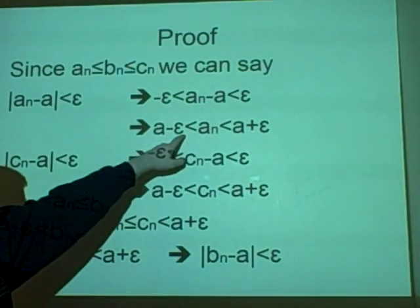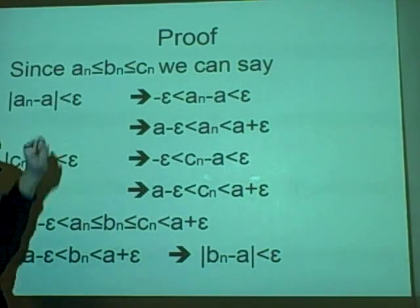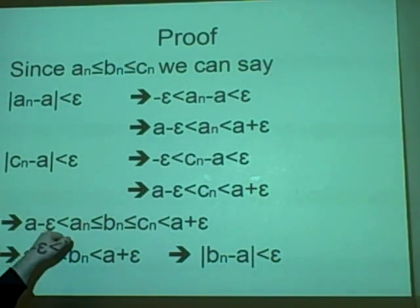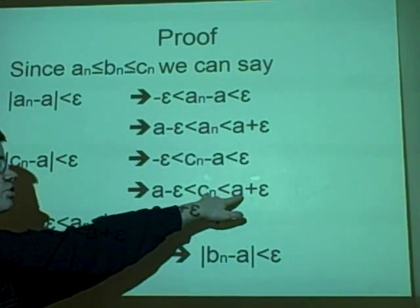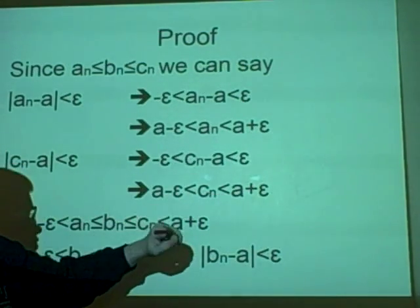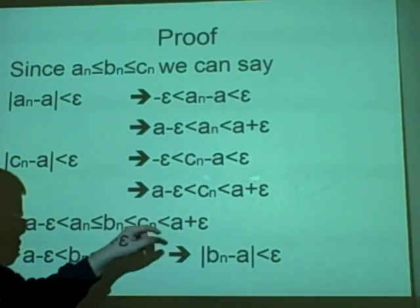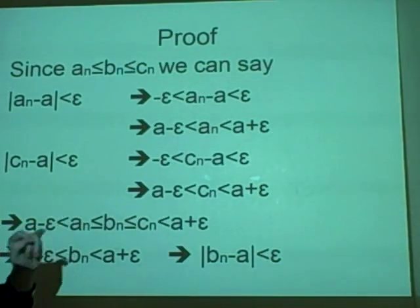So we've got a minus epsilon is less than an. We can put that up here, which we have done here. a minus epsilon is less than an. And the same with the cn, but we'll use the top part. So this is also true. So bn is fine here.